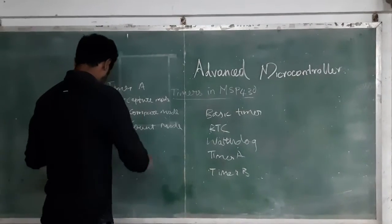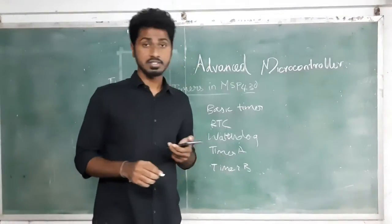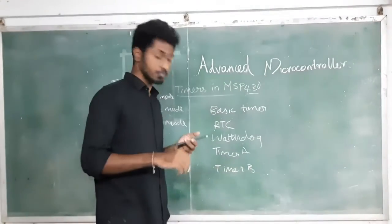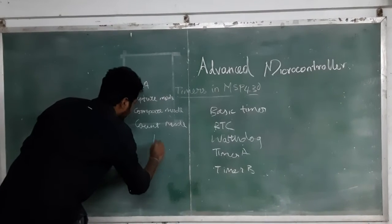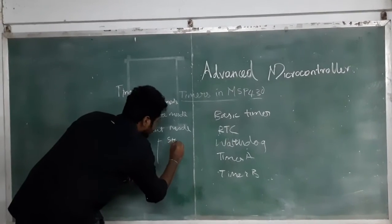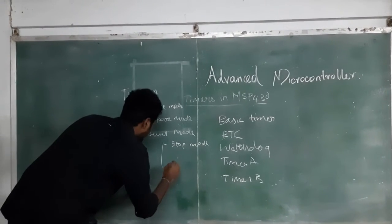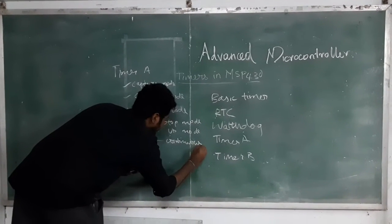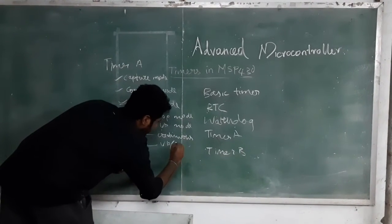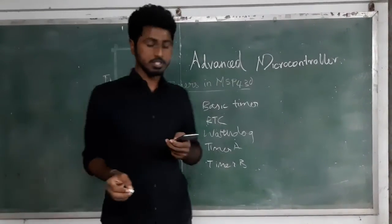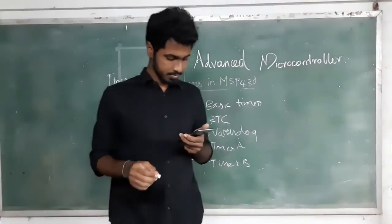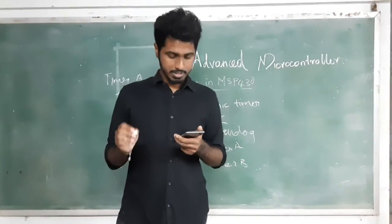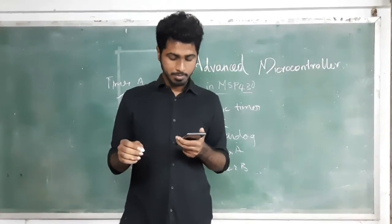In count mode, it is typically used in capture mode to generate cyclical events and can also apply to measuring cyclical events. Timer A supports 4 modes of operation in count mode: stop mode, up mode, continuous mode, and up/down mode. In stop mode, the timer is halted. In up mode, the timer repeatedly counts from 0 to the value stored in the capture or compare register. In continuous mode, the timer repeatedly counts from 0 to 0xFFFF, which is the maximum value for the 16-bit TAR register.